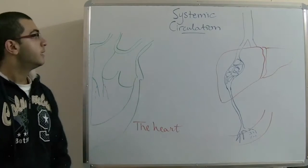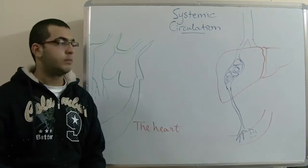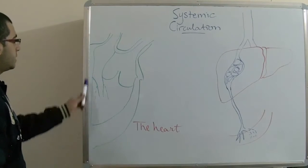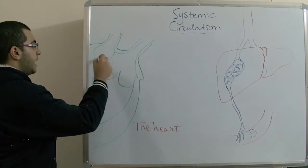Hello everybody and welcome back. Today I will talk about the systemic circulation, as last time we talked about the pulmonary circulation. This is the left side of the heart, this is the septum, the left ventricle, left atrium, and the aorta.